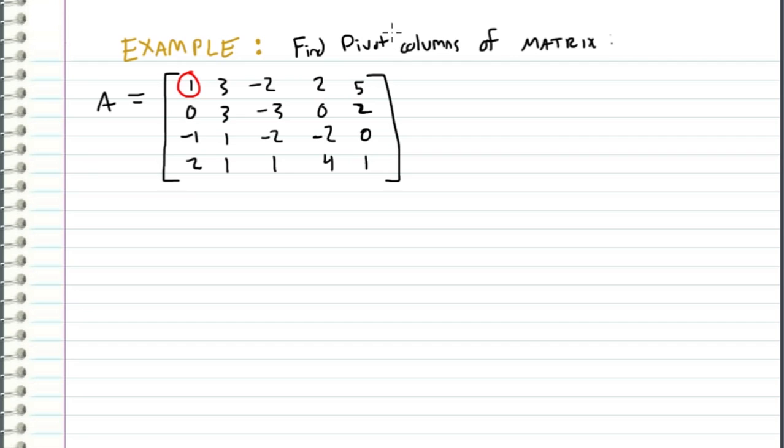So let's start with the top left. We'll use this guy as a pivot and we need to cancel out everything below it. So we can take this third row and add the first row to it, and then we can take the fourth row and subtract two times the first row.